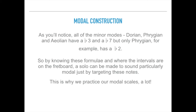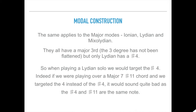As you'll notice, all the minor modes — these being Dorian, Phrygian, and Aeolian — have a flat 3rd and a flat 7, but only Phrygian has a flat 2. By knowing these formulae and where the intervals can be found on the fretboard, a solo can be made to sound particularly modal just by targeting these notes. The same applies to the major modes — Ionian, Lydian, and Mixolydian — they all have a major 3rd, but only Lydian has a sharp 4. So when playing a Lydian solo we could target the sharp 4. Indeed, if we were playing over a major 7 sharp 11 chord and targeted the 4 instead of the sharp 4, it would sound quite bad, as the sharp 4 and the sharp 11 are in fact the same note.